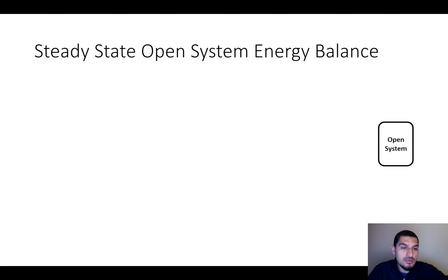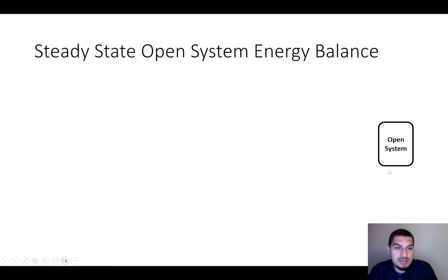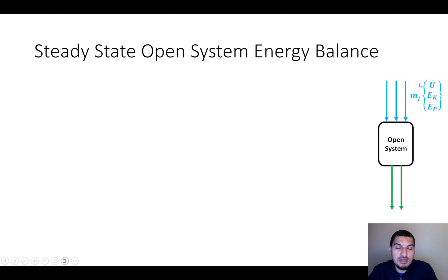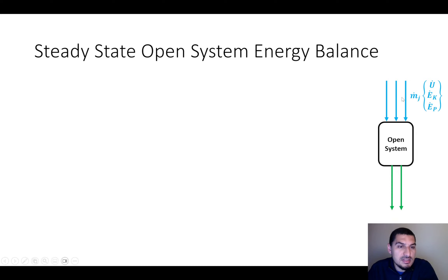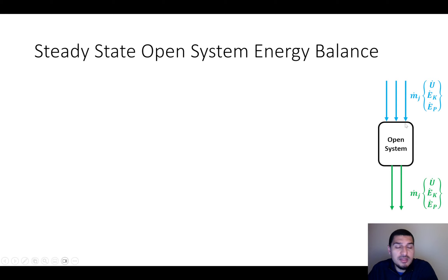Let's take this system as our control volume for our energy balance. We have streams going in and out with mass flow rate, and this mass carries energy into the system in the forms of internal energy, kinetic energy, and potential energy. Similarly, the stream going out carries mass with its energy as well, so there is energy going in and energy going out in the forms of internal, kinetic, and potential energy.